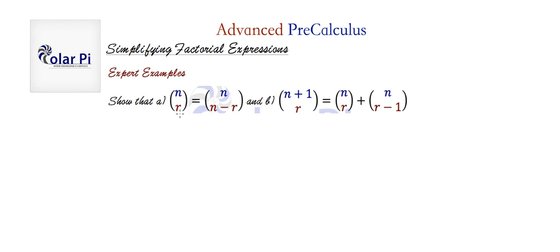Remember, n choose r tells you how many ways there are to choose r things from n things, and clearly n choose r by definition involves factorials. There is actually a very intuitive reason why n choose r is equal to n choose n minus r, but here we need to give an algebraic proof, and likewise with this other property of n choose r.